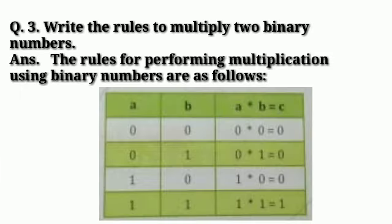Now the third question is write the rules to multiply two binary numbers. Answer: the rules for performing multiplication using binary numbers are as follows. We will make this table: 0 multiplied by 0 equals 0, 0 multiplied by 1 equals 0, 1 multiplied by 1 equals 1. So you have to make this table in the same way as it is shown in the picture.